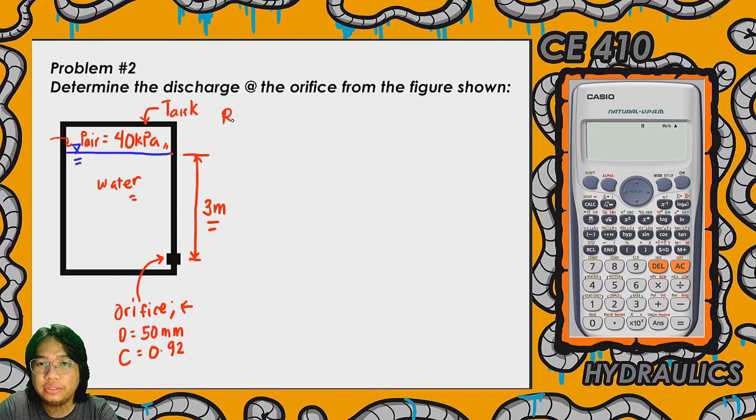So assuming that this head is constant and there is a continuous supply here in the tank, the required is to determine the flow rate or Q.